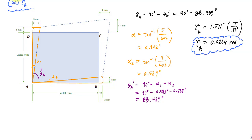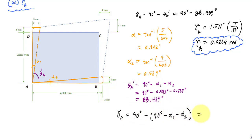You'll notice that the shear strain is simply the sum of alpha 1 plus alpha 2. If you symbolically substitute, gamma A equals 90 minus theta A prime equals 90 minus (90 minus alpha 1 minus alpha 2), which simplifies to just alpha 1 plus alpha 2.